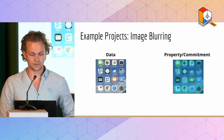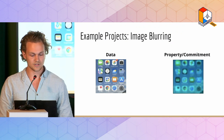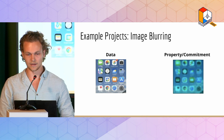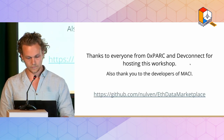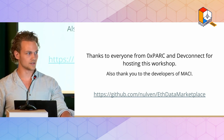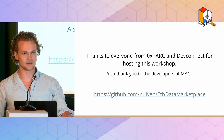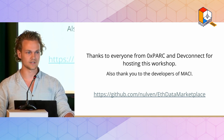Something I've also been working on over the past couple of months is image blurring as a case example — you input an image and the property commitment is a Gaussian-blurred image produced in a SNARK. Thank you to everyone from 0xPARC and from DevConnect for hosting this workshop, and additionally thank you to the developers of MACI — the ECDH symmetric key encryption scheme was taken from them, along with a number of their crypto libraries. The repo is linked and I'm free for anyone to come talk after the session.